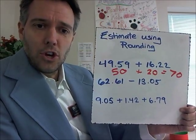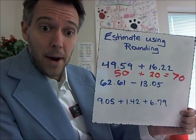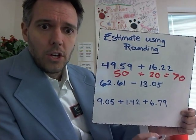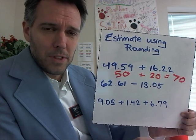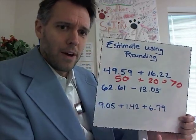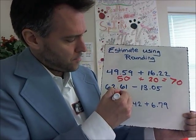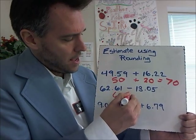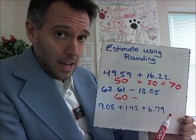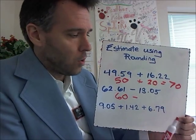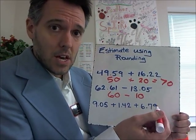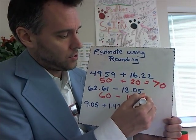How about this next one? 62 and 61 hundredths minus 13 and 5 hundredths. You want to get rid of the decimals. You can round 62 and 61 hundredths to 63, but with mental math you're going to think this might be a little difficult. Let's just round that down to 60. And you're going to subtract something from it. What's easier to subtract from 60? 13 — you can round 13 and 5 hundredths to 13 — or 10. Let's make it 10. See how I'm doing this? I'm just giving myself easy numbers to use. 60 minus 10 is 50.